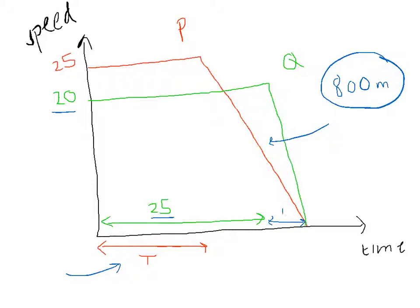Now, I'm going to call that time there, little t. See if you can now write an expression for the area under graph Q and work out what little t is.